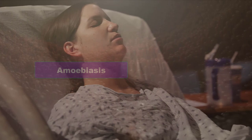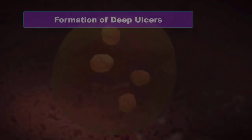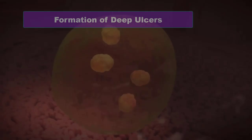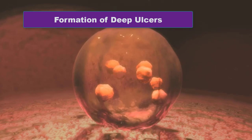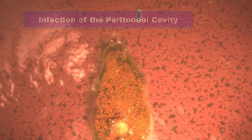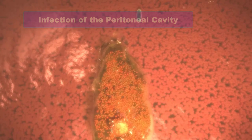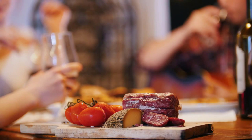Amoebiasis is a disease caused by Entamoeba histolytica. The parasite enters the body as a cyst which develops into an amoeboid form that causes deep ulcers. Cysts are ingested and passed through the stomach, and the amoebas emerge from the cysts in the terminal small intestine where they form deep ulcers. Perforation of the large intestine leads to infection of the peritoneal cavity. Some amoebas form cysts and pass out of the body in feces, remaining alive in the environment and transmittable to another organism if ingested as a contaminant in food or water. Some amoebas pass into the bloodstream and infect other organs.